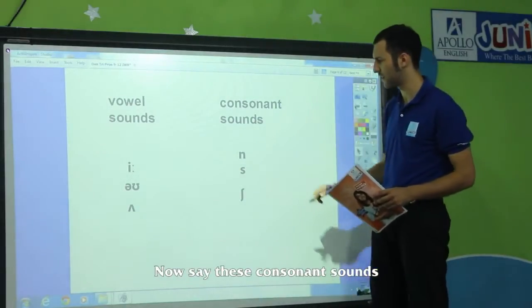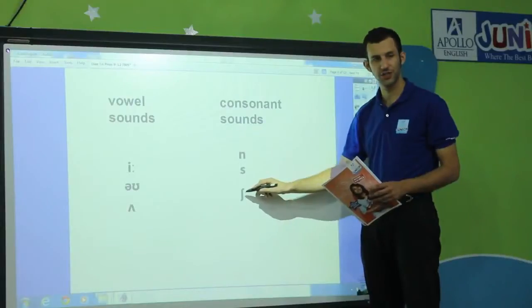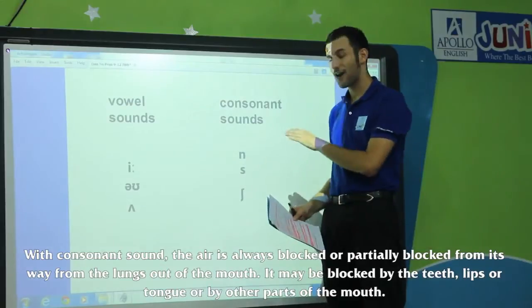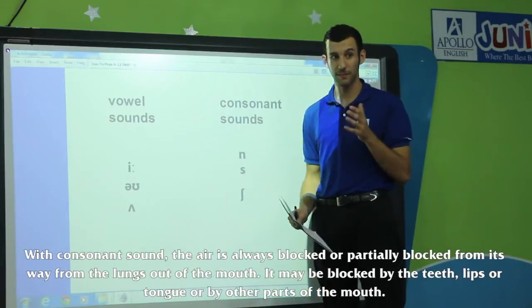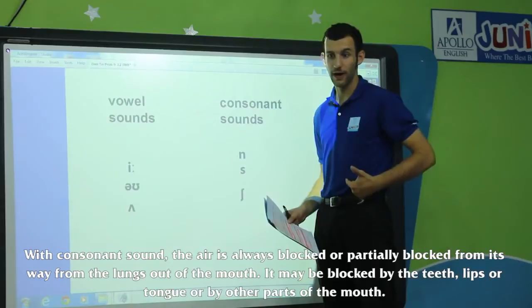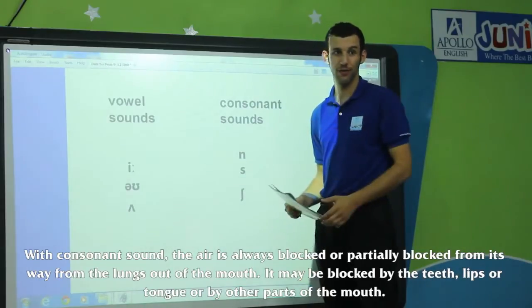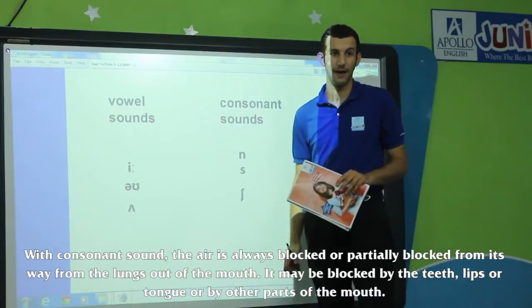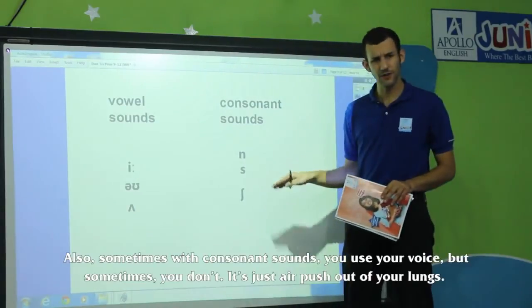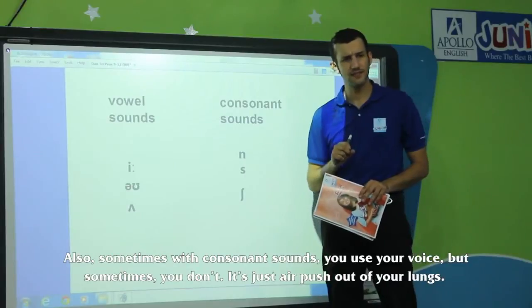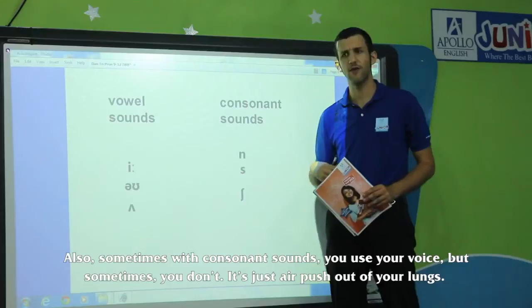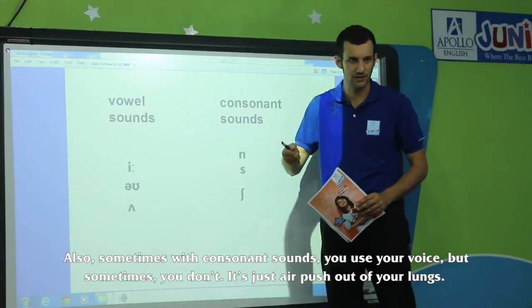Now, say these consonant sounds with me. F. S. Sh. With consonant sounds, the air is always blocked or partially blocked on its way from the lungs out the mouth. It might be blocked by the teeth, or by the lips, or by the tongue, or by another part of the mouth. Also, sometimes with consonant sounds you use your voice, but sometimes you don't — it's just air pushed out your lungs.